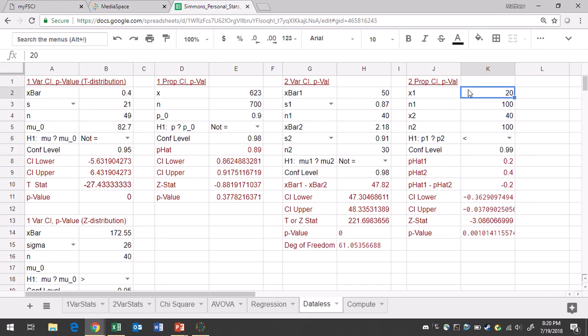Type in your number of successes in the first sample, which would be in this case, 408. Your sample size, 716. In your second group, you had 304 successes out of 498, and the sign of your alternative hypothesis was not equal to.